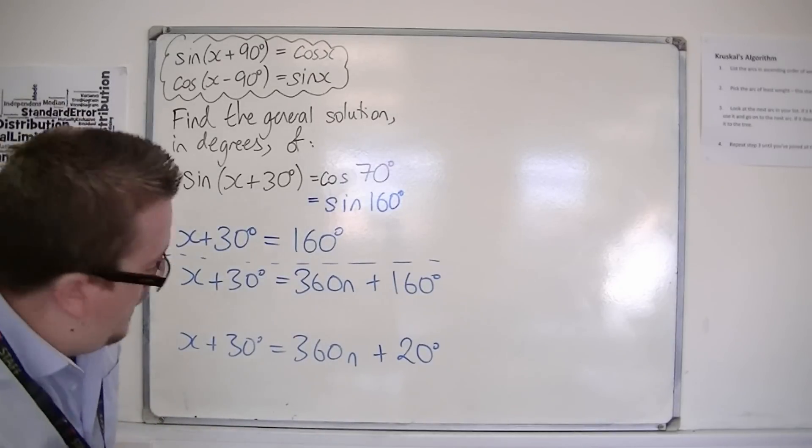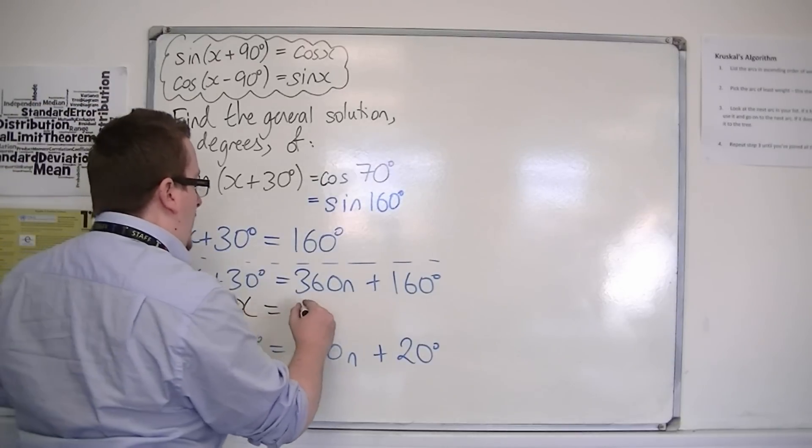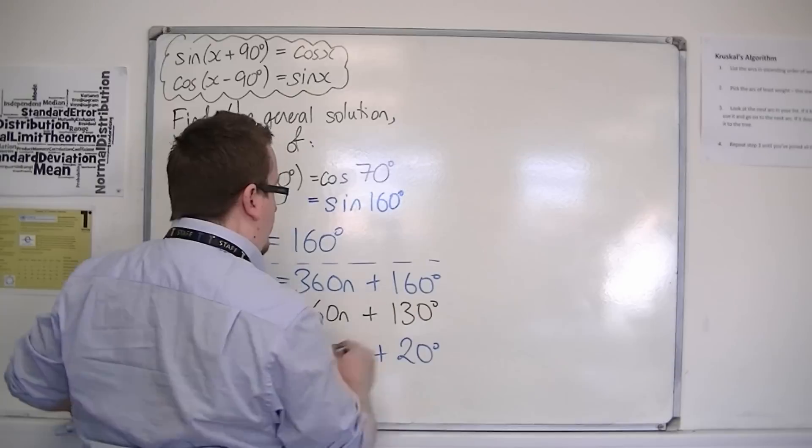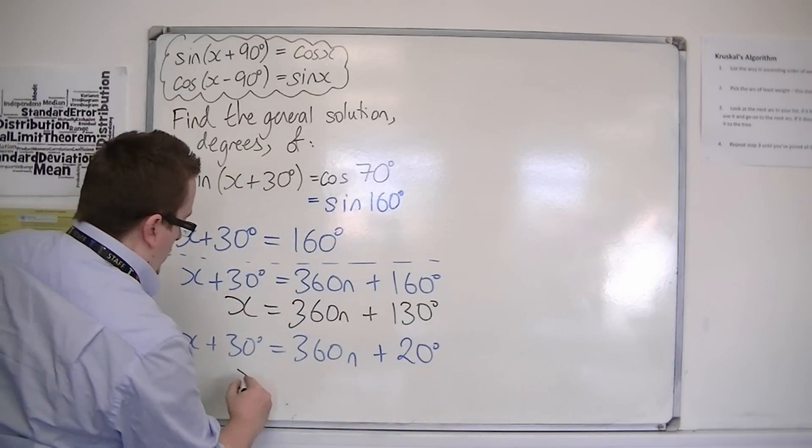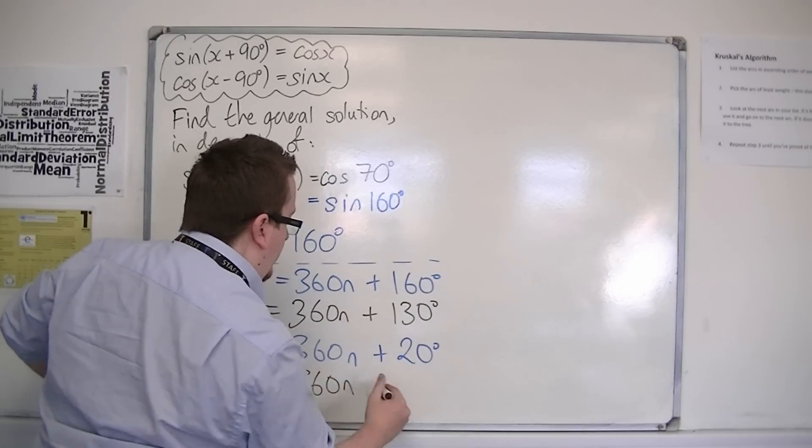You can then take 30 from both sides, so x is 360n plus 130, or x is 360n minus 10.